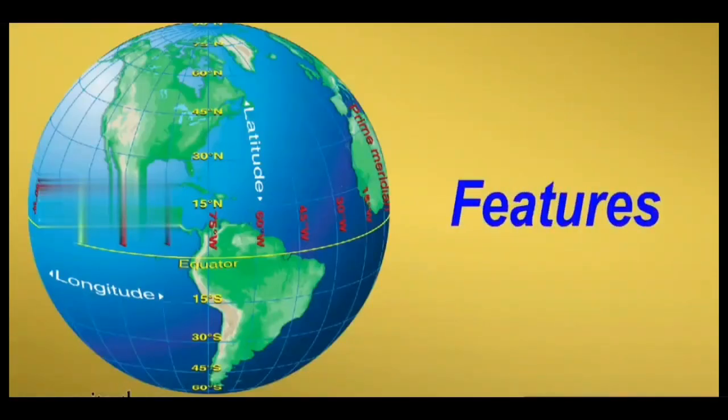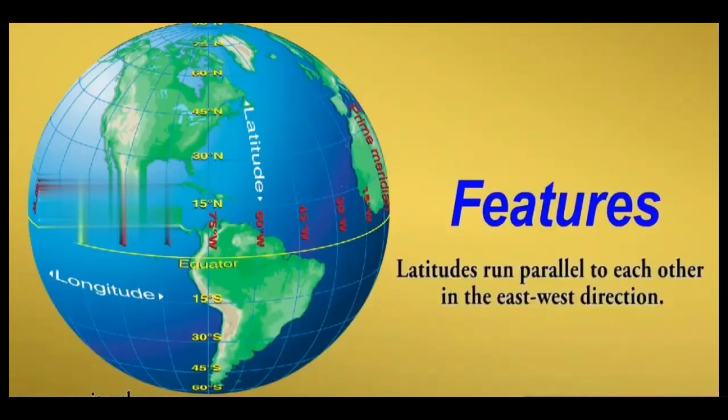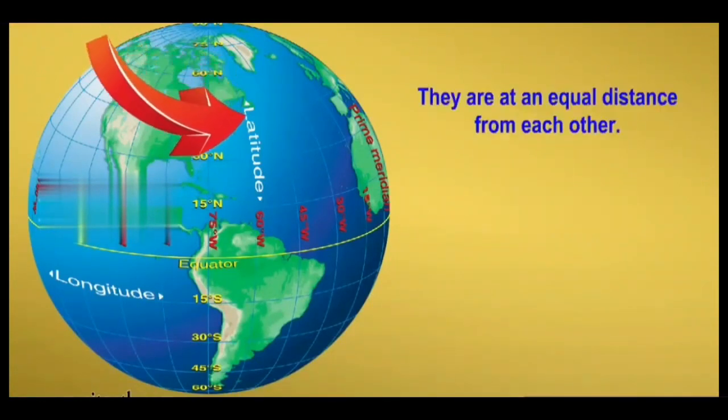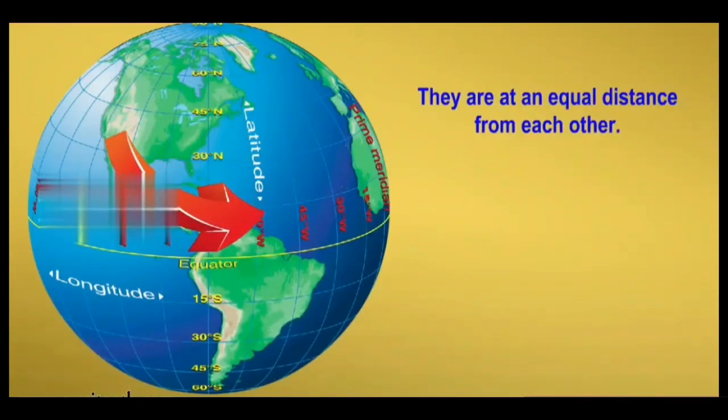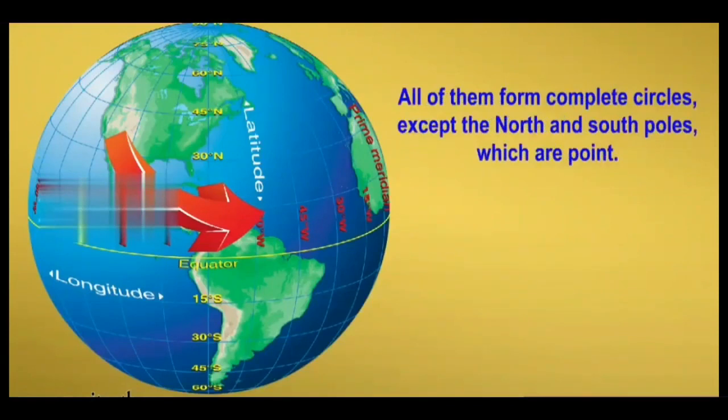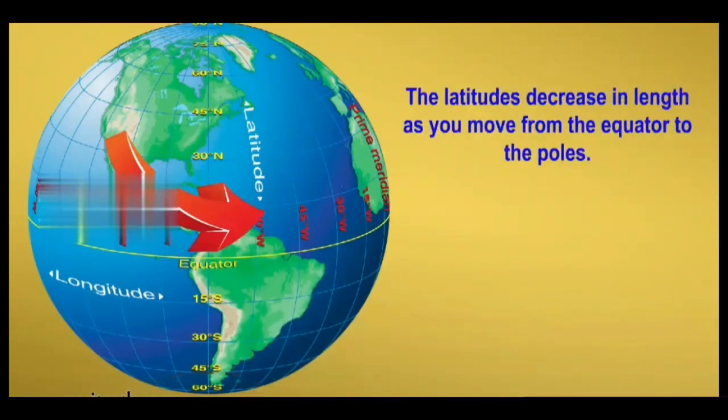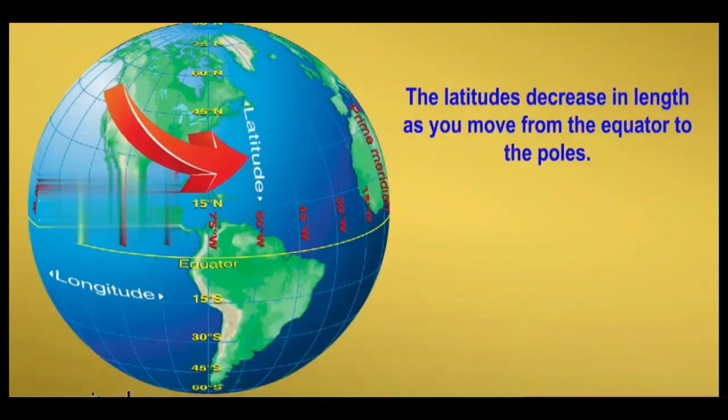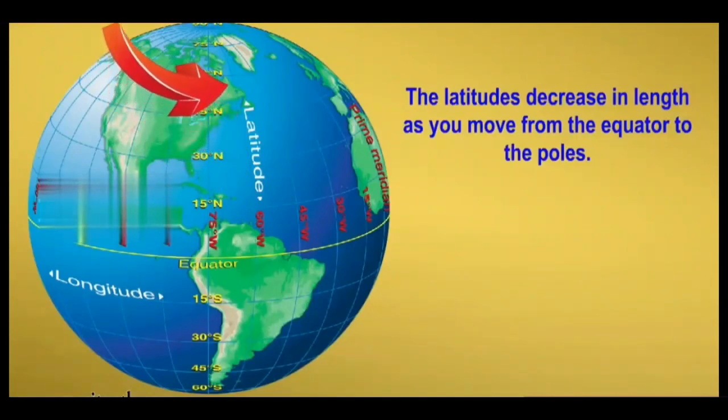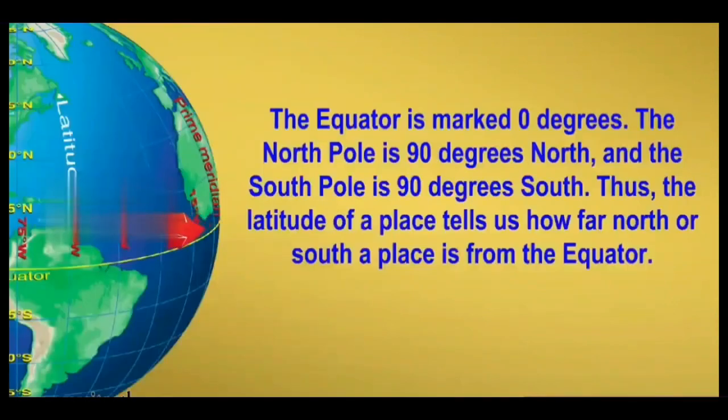Latitudes. Latitudes run parallel to each other in the east to west direction. They are at an equal distance from each other. All of them form complete circles except the north and south poles which are points. The latitudes decrease in length as you move from the equator to the poles. The equator is marked zero degrees. The north pole is 90 degrees to north and the south pole is 90 degrees to south.